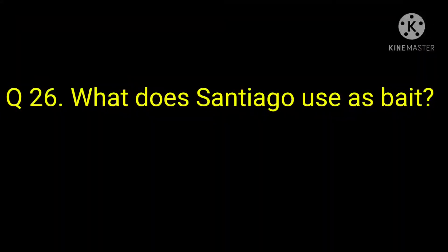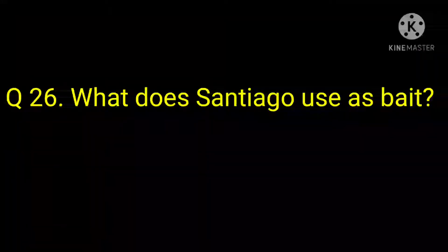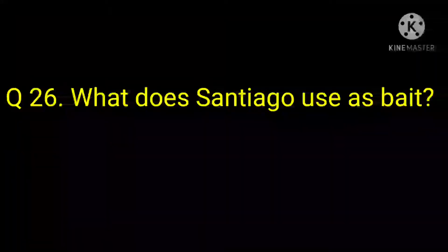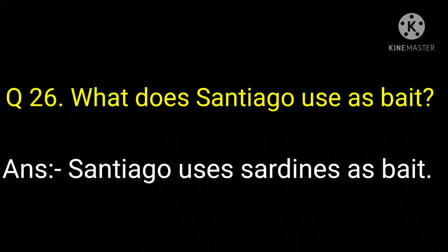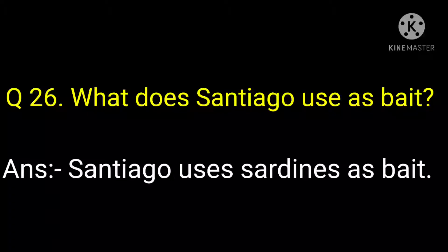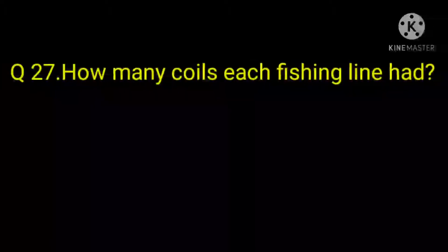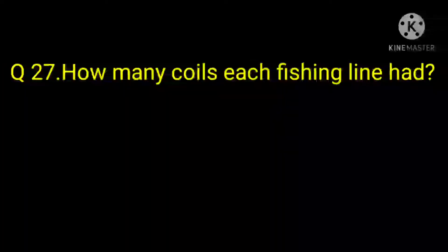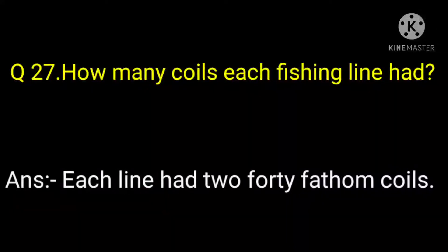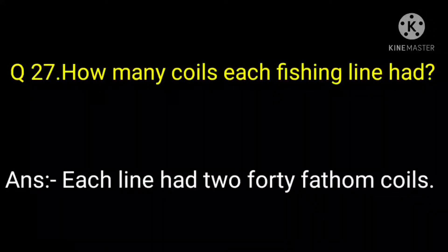Next question: What does Santiago use as bait? Santiago used sardines as bait. How many fathoms did each fishing line have? Each fishing line had 240 fathoms.